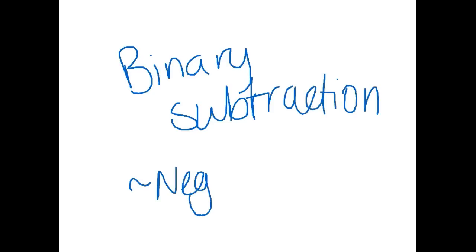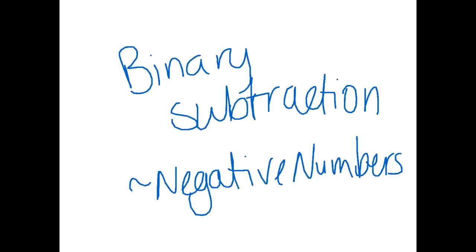Kat here to talk about binary subtraction and negative numbers. The reason I link binary subtraction to negative numbers is that the computer can't actually subtract — it adds, and it only adds. So basically what happens when you want to subtract something is you need to find a negative representation of that number and add that to get your result.